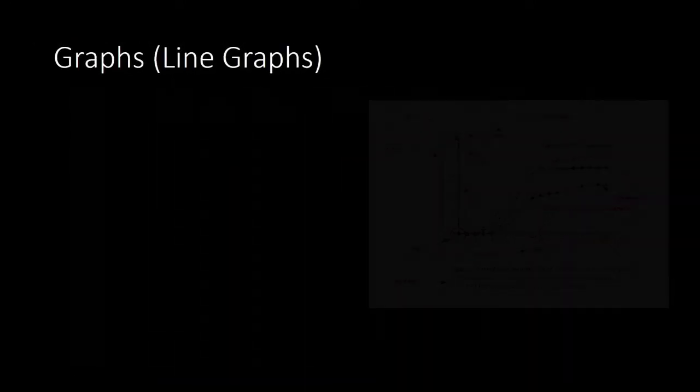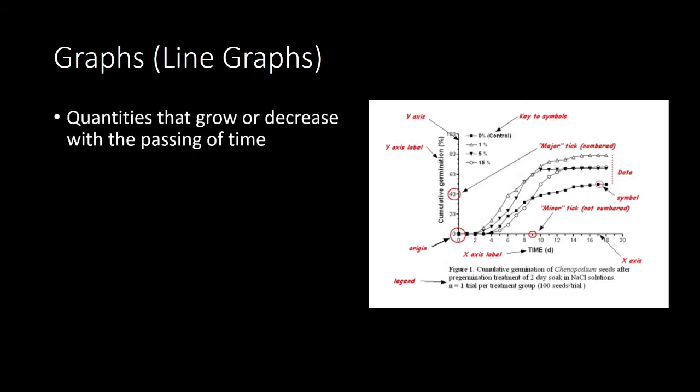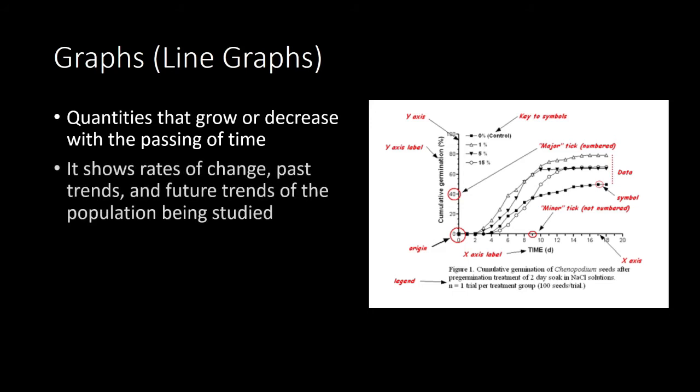Graphs or line graphs. You use this kind of visuals to convey information about quantities that grow or decrease with the passing of time. We can make inferences about the rates of change. How steep are the curves? That will tell us the rates of change. The past trends. And we can also make some inferences about the future trends of the population being studied by just looking at the line graph.